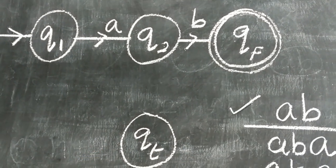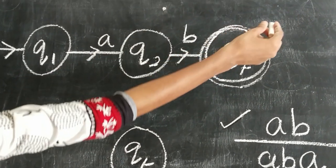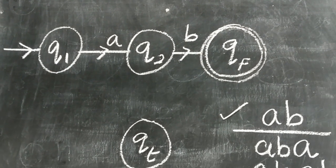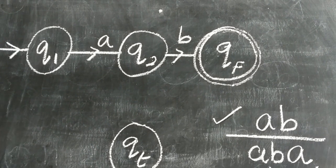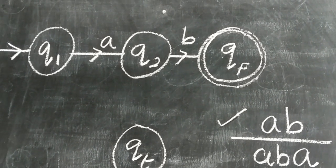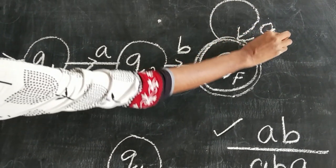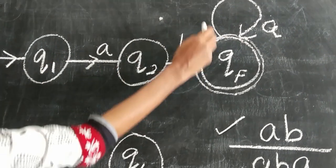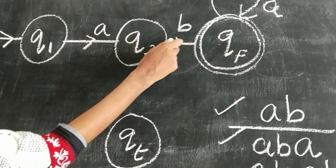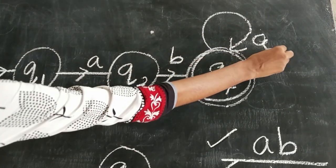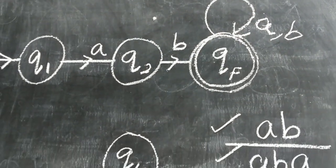Next we draw the string ABA. We already have AB drawn. Now we need to add A from the final state QF. Remember: always create a new path only when there is no existing path to follow. So from QF we give a self-loop on A. Now we have the string ABA covered. Next we draw ABAB. From QF after the A transition, we give B, so we have ABA then B — the string ABAB is covered. These three strings are now complete.